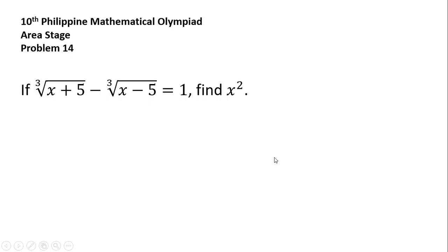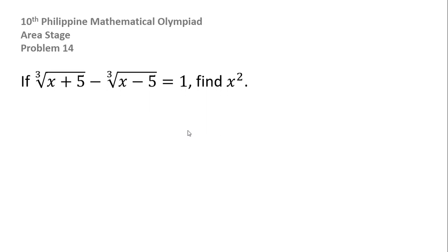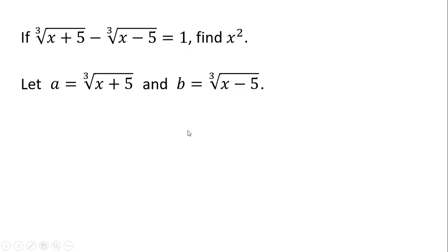For this particular problem, we don't have to find the value of x just to find the value of x squared. We can just apply the substitution method and the algebraic manipulation method to get the value of x squared. To get started, we let a be equal to the cube root of x plus 5 and b be equal to the cube root of x minus 5.